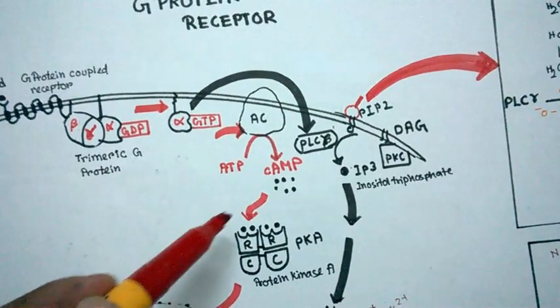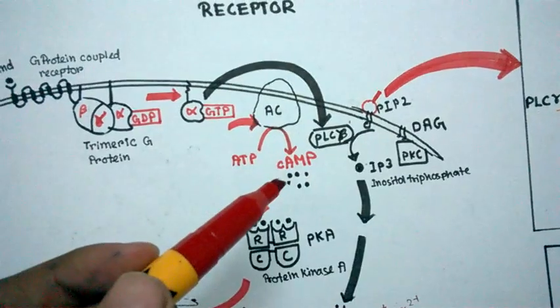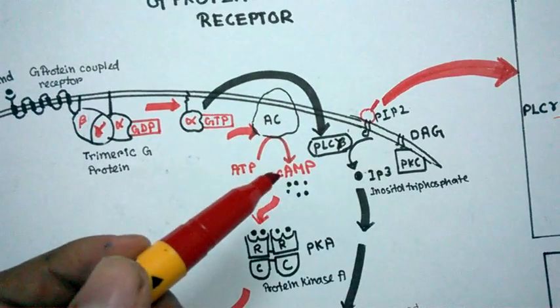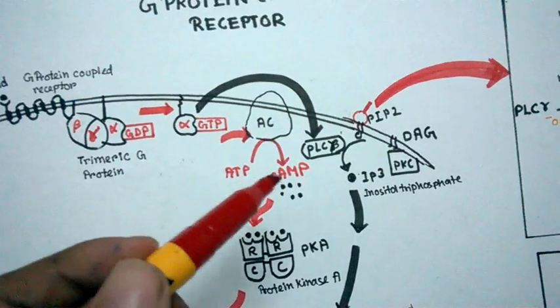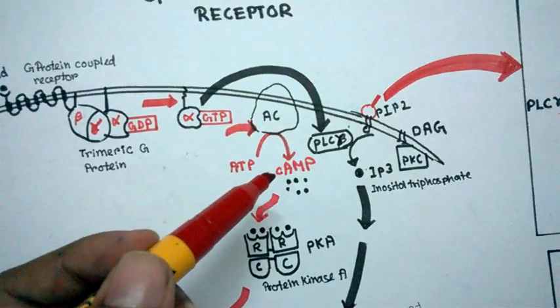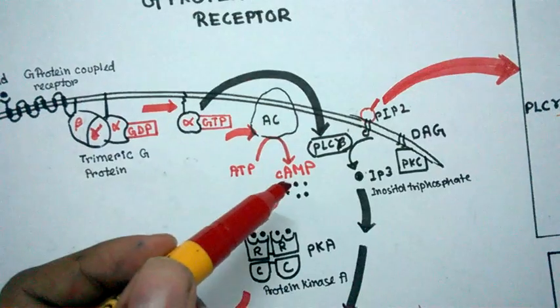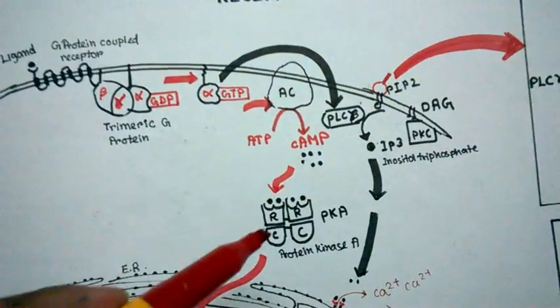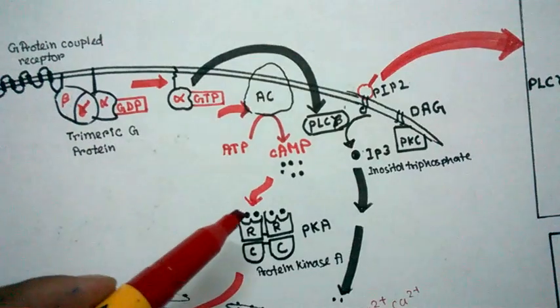Note that ATP cannot be a second messenger because there is plenty of ATP in the cell. The cell needs a distinct type of structural molecule to be a second messenger, and that is why the cell chooses cyclic AMP. Cyclic AMP will go and bind to protein kinase A, or PKA.